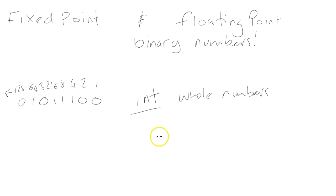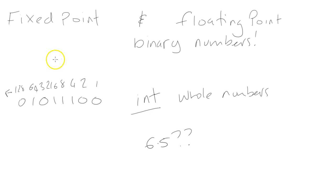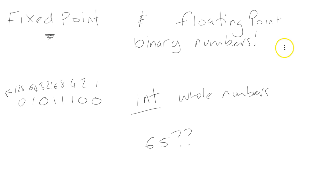What do you do when you want to store a number with a decimal — so for example, 6.5? Well, this can be achieved in two ways. We can either use a fixed-point binary number or we can use a floating-point binary number. Fixed-point is the easier one to understand, and we'll cover that one first. Then we're going to look at floating-point numbers, which are a little bit more complicated but actually give us a lot more flexibility with our number system.